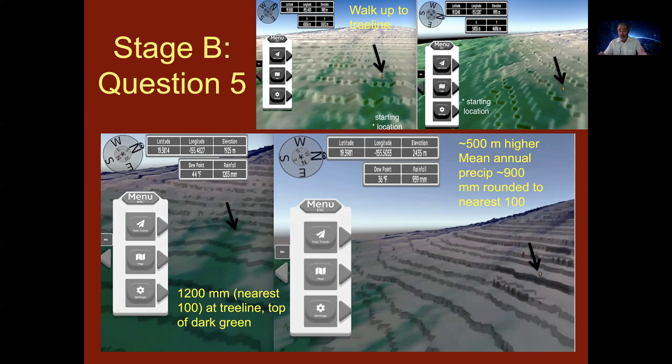So for example, the upper images are where the question indicated for one of the locations for you to go, a starting location, and then you have to use your judgment for where you find the tree line. So you're simply walking the avatar uphill and you're noting the elevation of the tree line and the precipitation at that tree line. And you're getting it from the game environment.